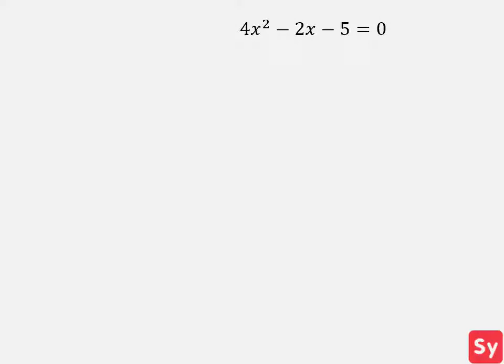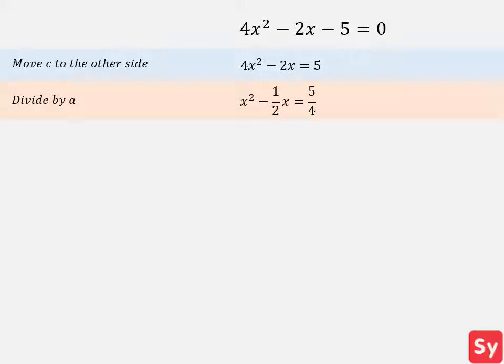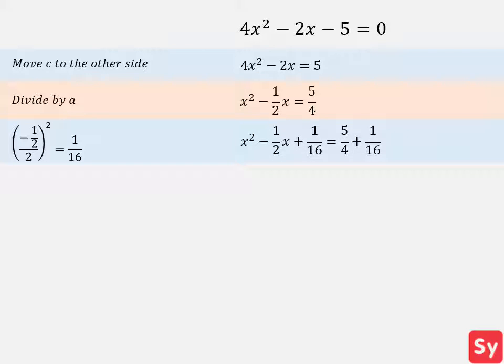Last example: we have the equation 4x squared minus 2x minus 5 equals 0. First, we move 5 to the other side of the equation. Next, we divide by a — we didn't have to divide by a in the examples before because a equaled 1. Next, we take negative 1 half, divide it by 2, and square it. We take this number, 1 sixteenths, and add it to each side of the equation.